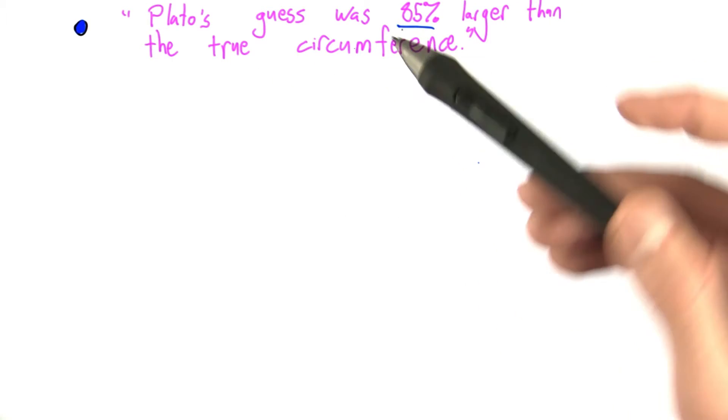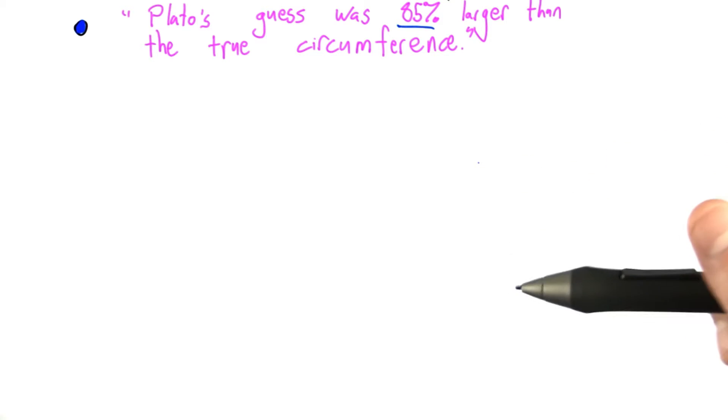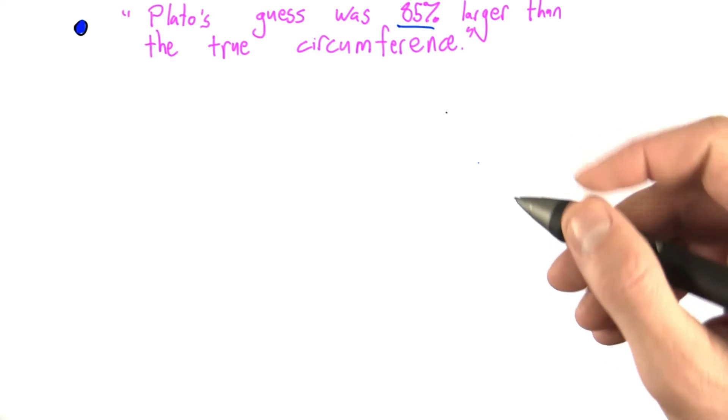Now the question is, where did this number come from? How do we get 85%? And to calculate percent error is a pretty straightforward calculation.